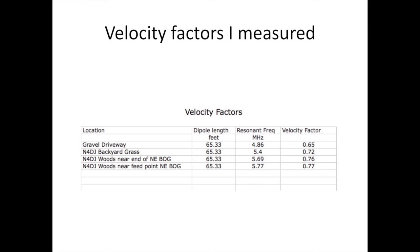Now here are some of the velocity factors that I measured at my particular location. I have a gravel driveway, backyard grass, woods near the end of the northeast bog, and woods near the feed point of the northeast bog. The velocity factor I calculated was 0.65 on the driveway to 0.77 in the woods near the feed point of the bog. So we are looking at a velocity factor of maybe 0.72 to 0.77 underneath all my bogs.